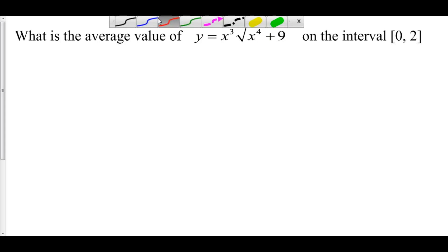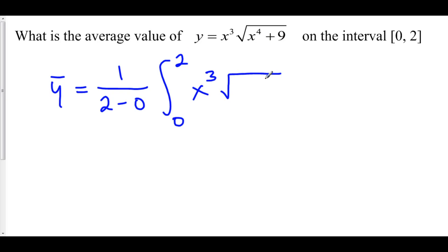Using our average value formula we know that y average is equal to 1 over b minus a, that's 2 minus 0, times the integral from a to b of your function which is x cubed times the square root of x to the fourth plus 9 dx. This is strictly from the formula for the average value function.